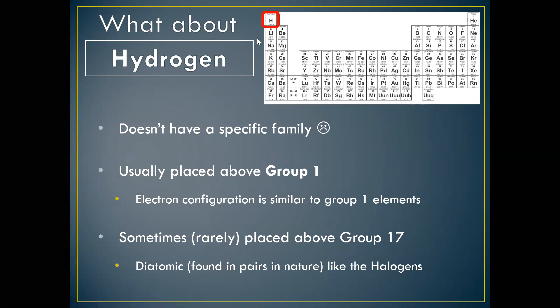So, it doesn't have a family, but it's still number one. It created everything. Without it, we wouldn't have the other elements. So, that is it. That is chapter five, the periodic table, the history of the table, the types of elements, metals, nonmetals, and metalloids. And then lastly, the families of the periodic table and hydrogen.